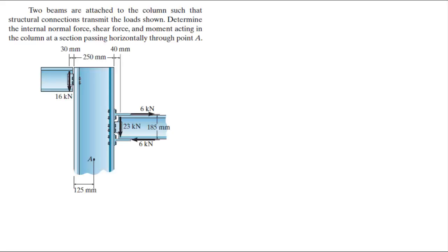Let's do this problem which turned out to be a bit confusing for a lot of people. Two beams are attached to the column such that structural connections transmit the loads shown. Determine the internal normal force, shear force, and moment acting in the column at a section passing horizontally through point A.